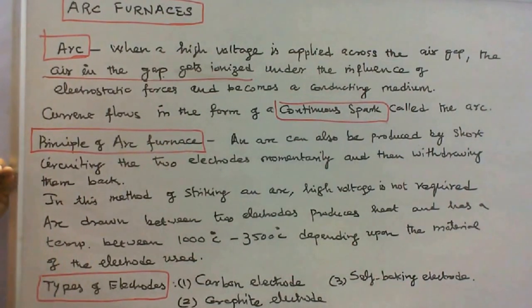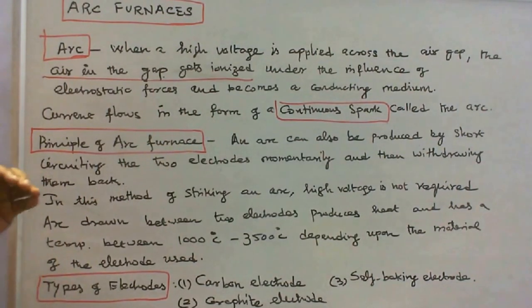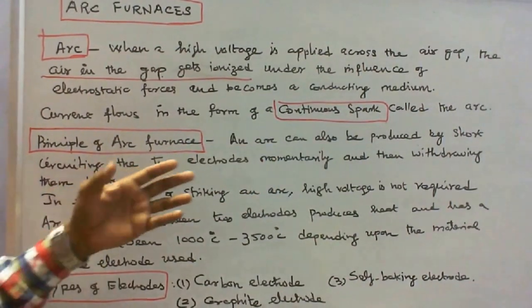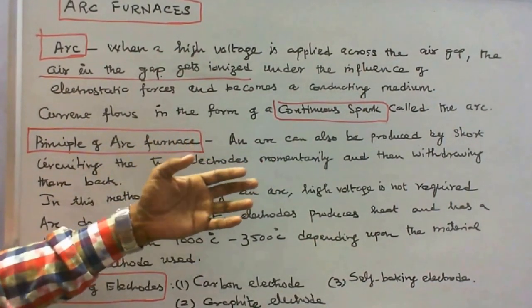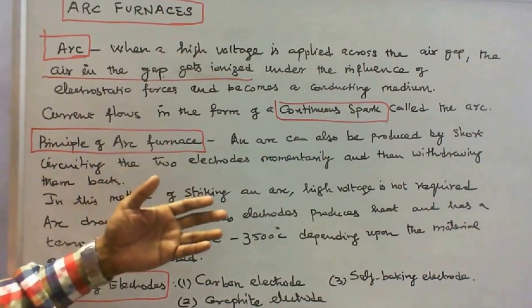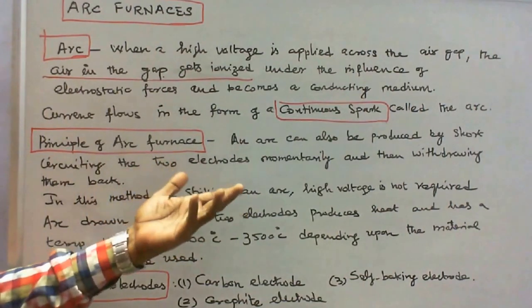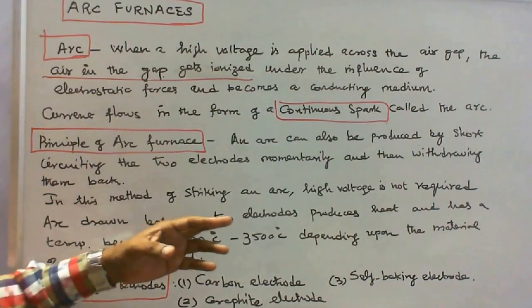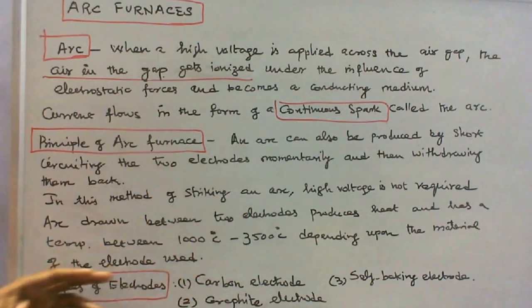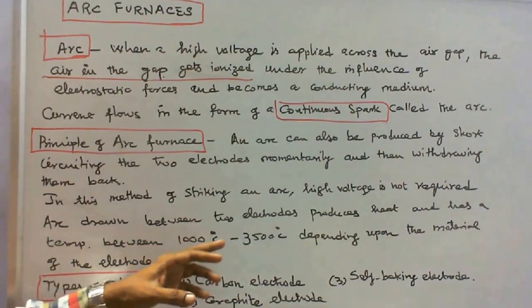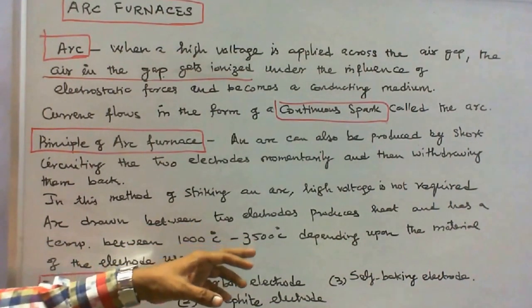What is the principle of arc furnace? An arc can also be produced by short circuiting the two electrodes momentarily and then withdrawing them back. In this method of striking an arc, high voltage is not required. An arc drawn between two electrodes produces heat and has a temperature between 1000 degrees centigrade to 3500 degrees centigrade, depending upon the material of the electrode used.